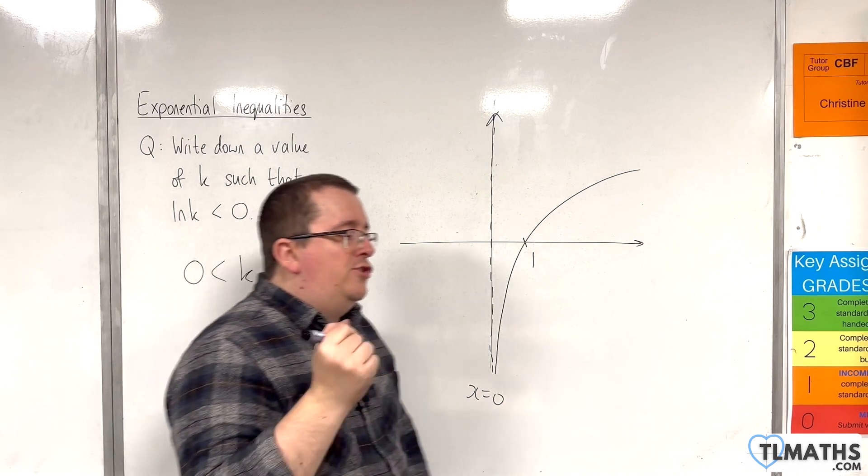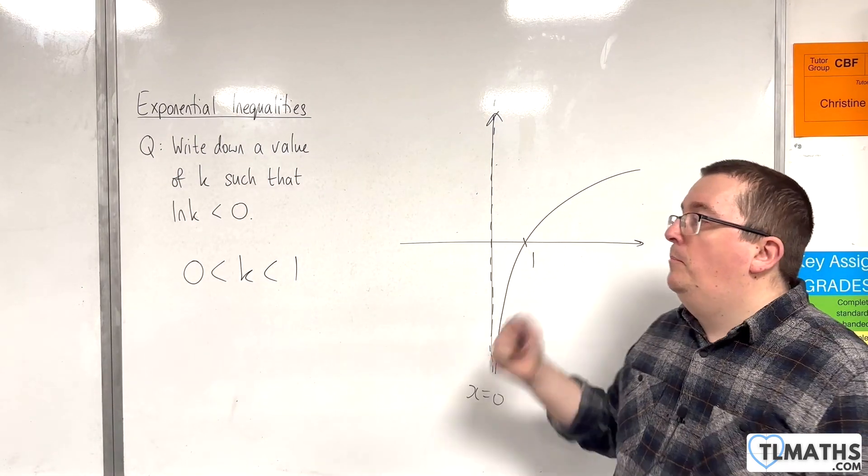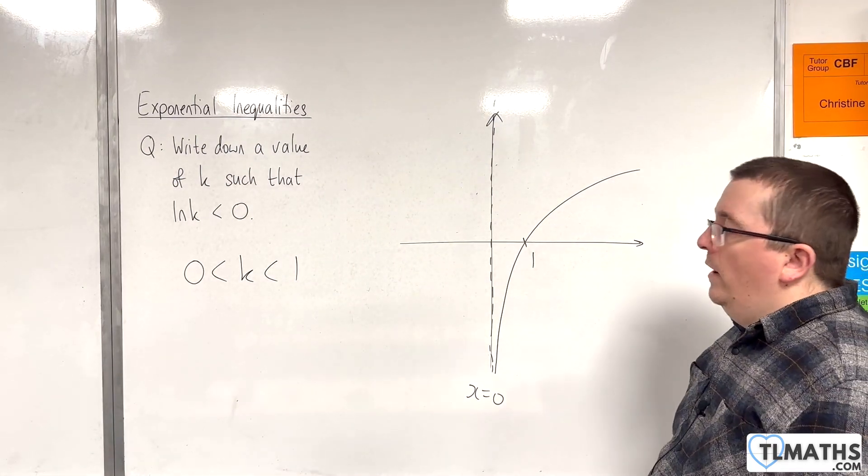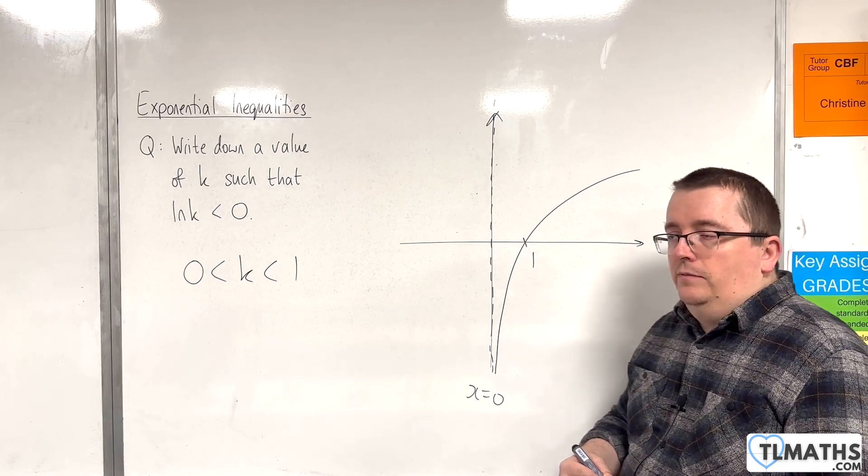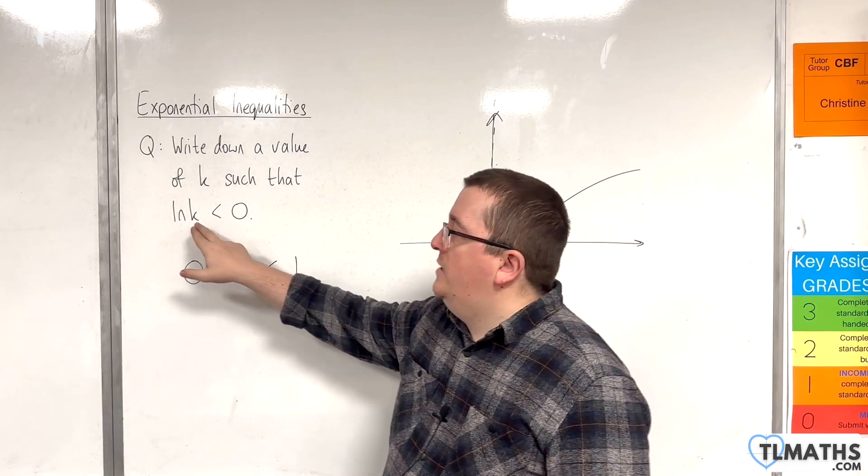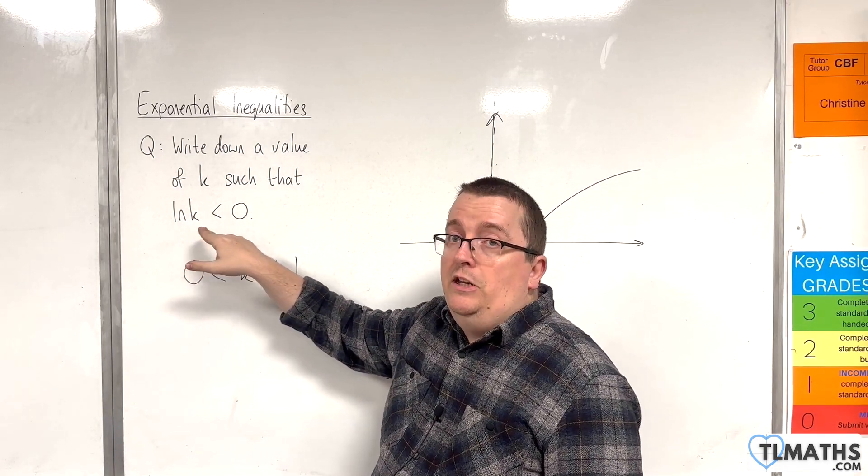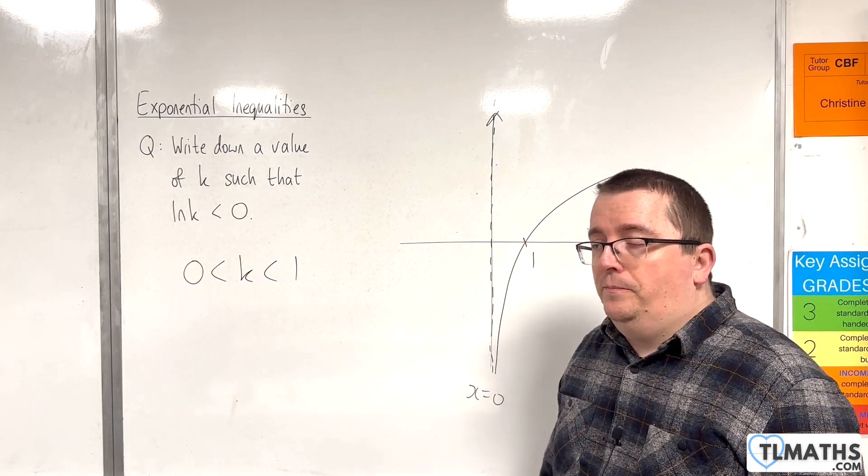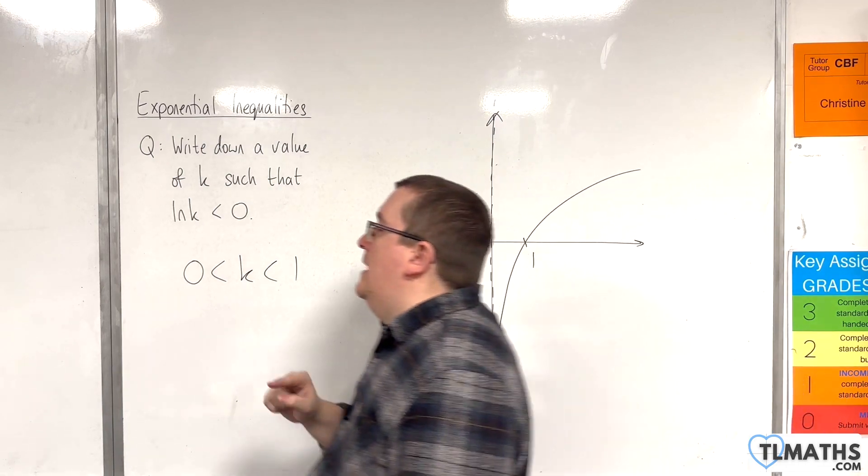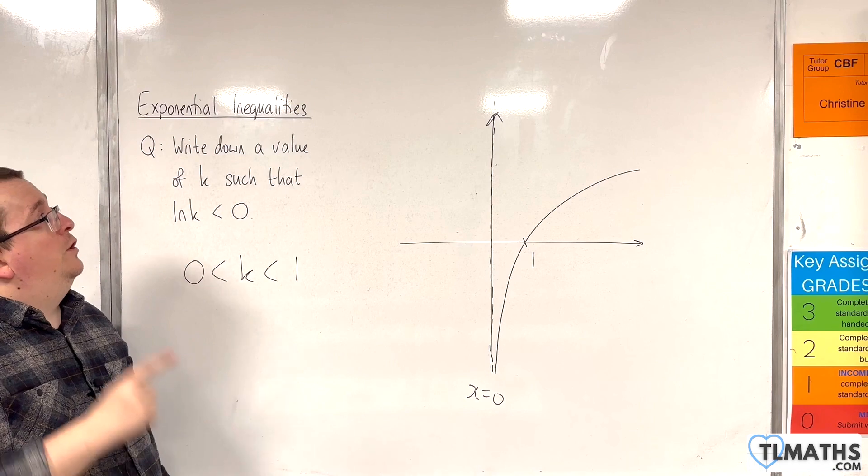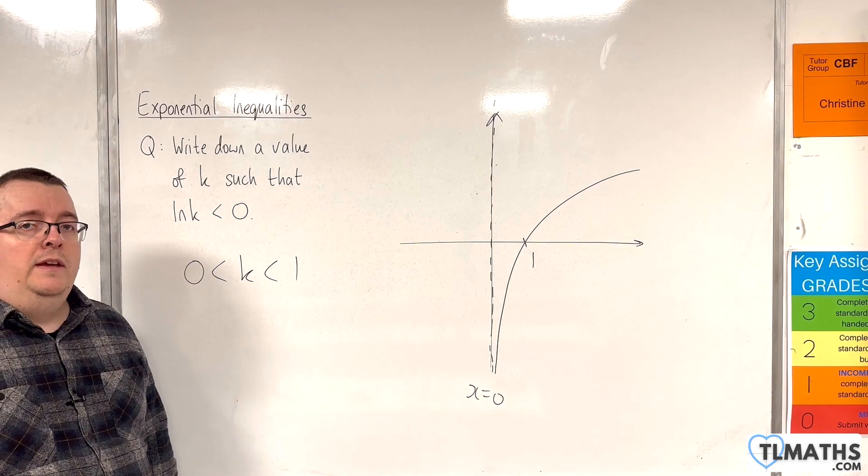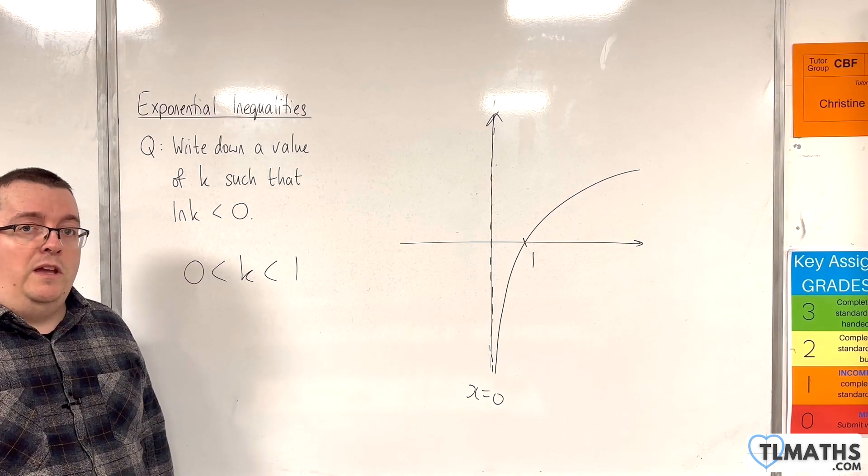So, if k is strictly greater than 0, but strictly less than 1, then the natural log of k will be negative. So, you're looking for a value between 0 and 1 here. And then you know that the logarithm is negative. So, keep these ideas in mind as we solve exponential inequalities. And I'll bring this up in the videos as we go.